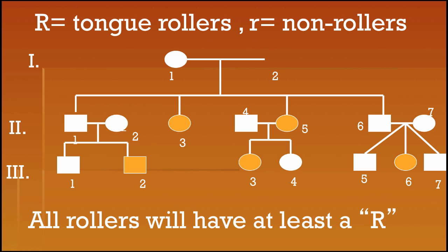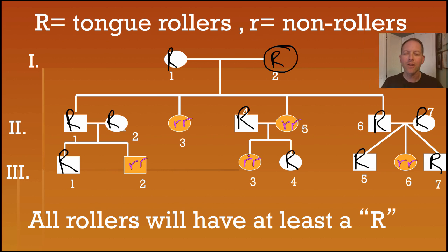Next. Now, all the rollers will have at least a big R. So, in those, let's put a big R. We know that the rollers have to be carrying at least a big R. What I've done here, I made a couple changes with the colors and with the lettering, but it's the same sheet that you still have from before.